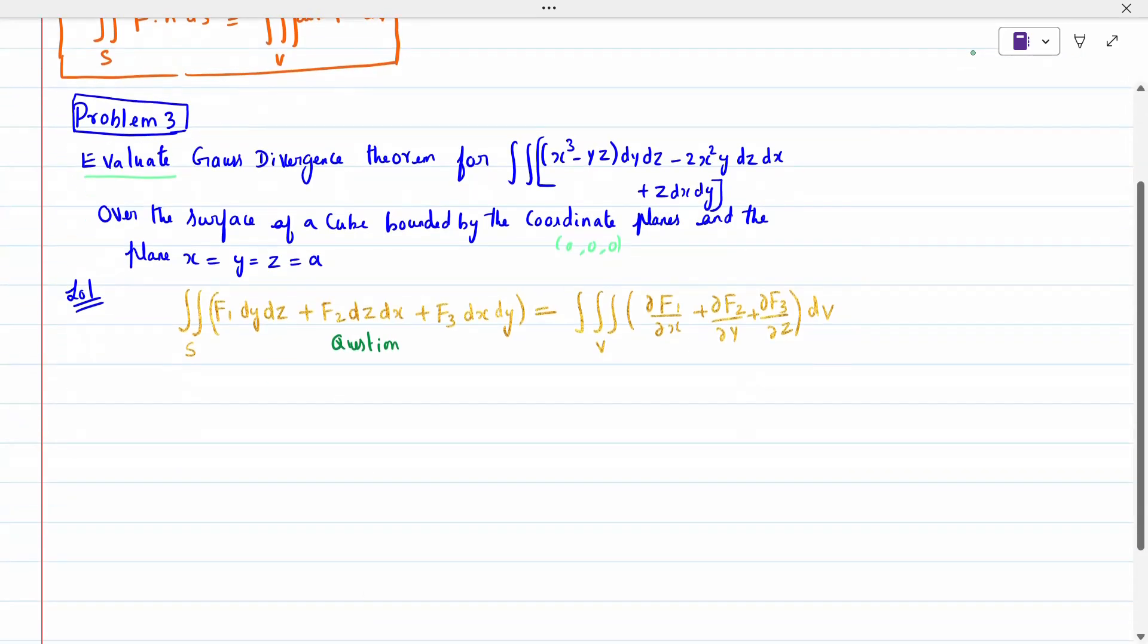From the question, f1 is x³ - yz, f2 is -2x²y, f3 is z. Now, ∂f1/∂x equals 3x². ∂f2/∂y when I differentiate is -2x². ∂f3/∂z when I differentiate is 1.